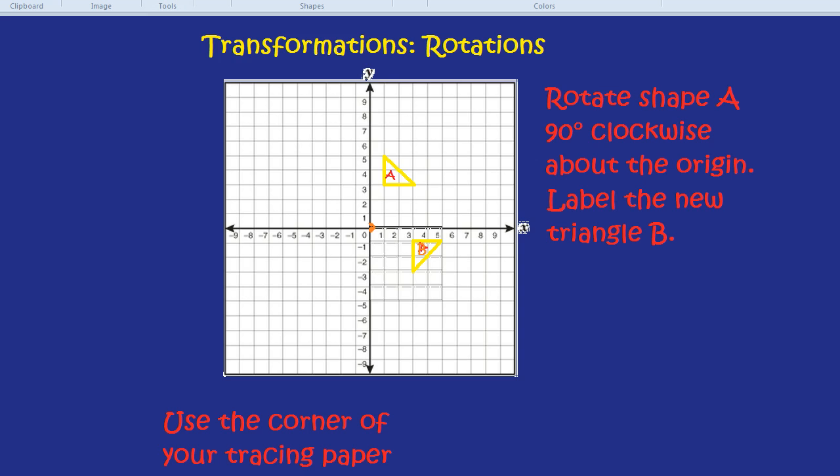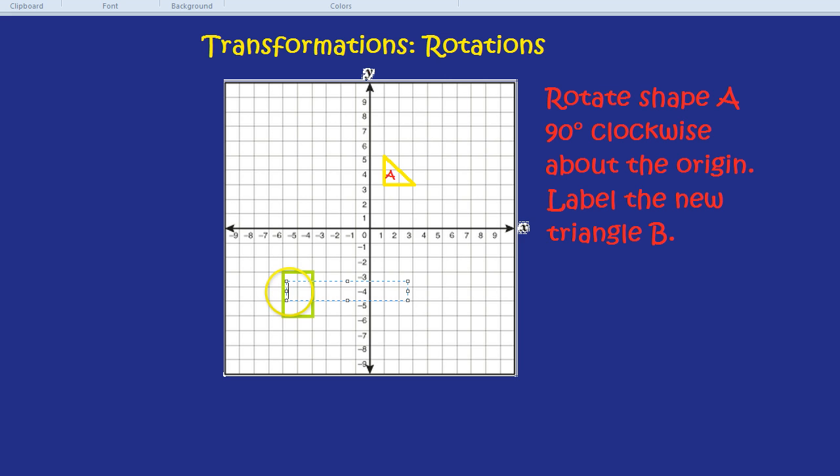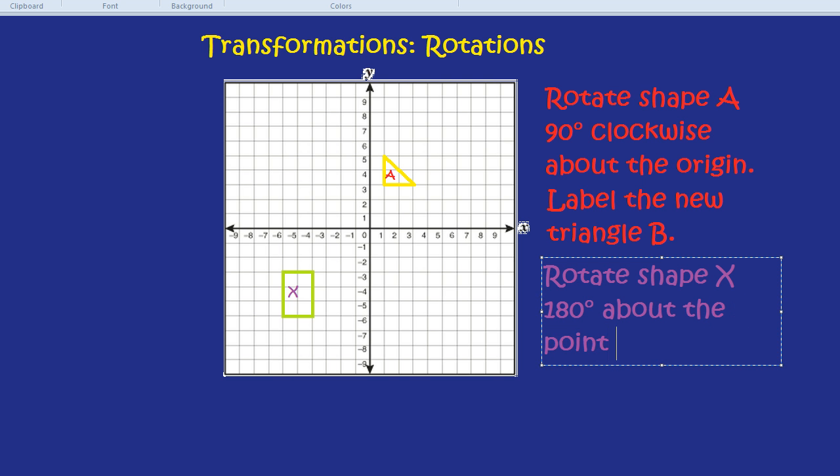Let's do one more question just to test out this theory. Let us do a new shape. For example, how about a rectangle? I'll leave the old one there. Let's call this shape X. And let's make up a question. The question is going to be, rotate the shape. This time it's not going to be about the origin, so it's going to be a little bit harder. Rotate shape X 180 degrees about the point (-6, -1).